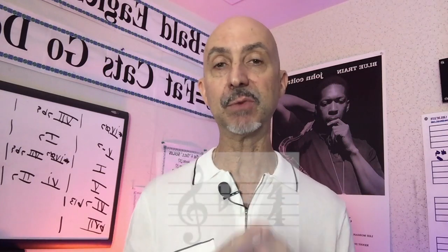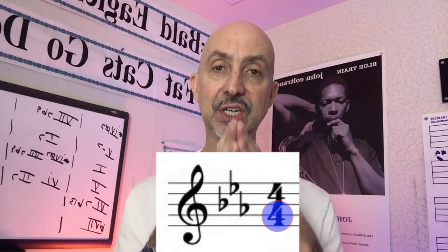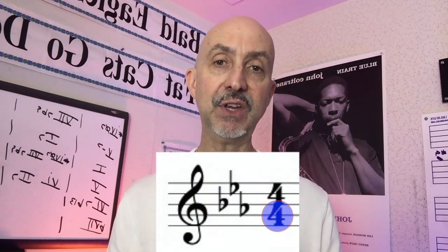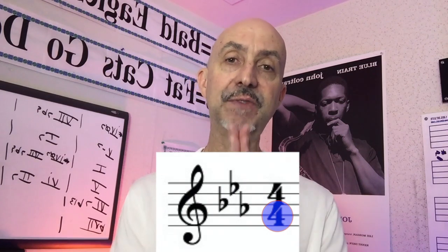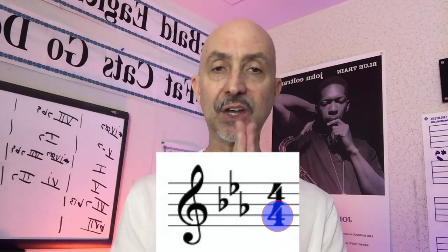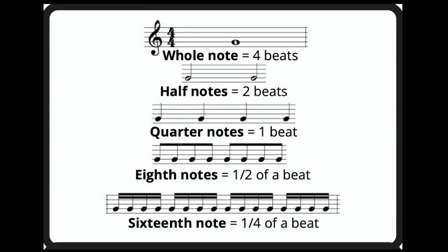The bottom number of the time signature tells us which type of note gets one beat. If there's a four on the bottom, we know that the quarter note gets one beat. If the quarter note gets one beat, then a half note gets two beats, a whole note gets four beats, and so on and so forth.